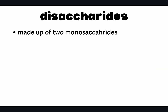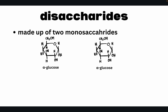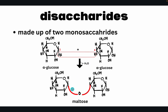Now let's look at disaccharides. From the prefix 'di,' these are made up of two monosaccharides. For example, two alpha glucoses combine where the hydroxyl group of C1 of the first alpha glucose reacts with the hydrogen at C4 of the second alpha glucose, releasing water to form maltose. This bond is called an alpha-1,4 glycosidic bond.